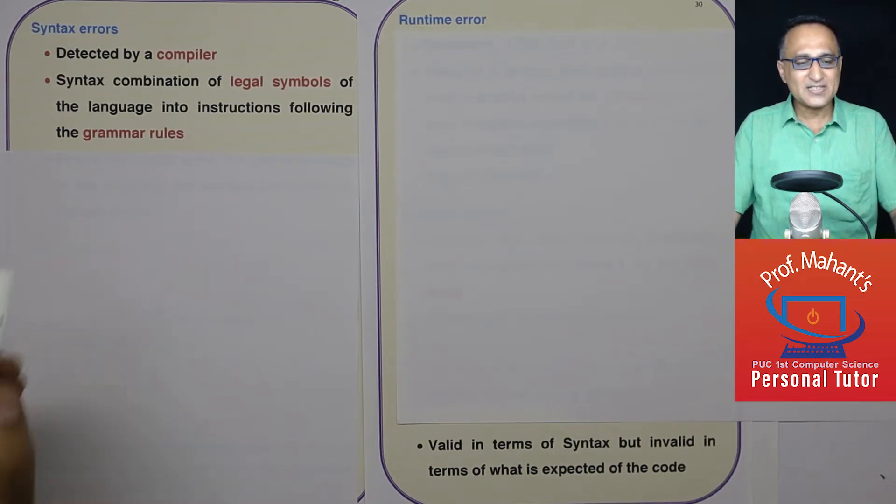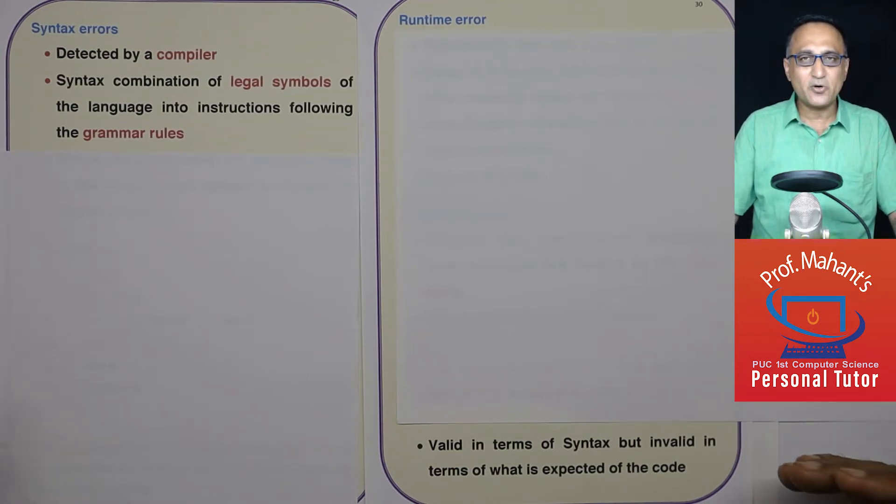These kinds of errors are detected by the compiler during the process of compilation. So what are legal symbols? In the English language, the alphabet A to Z are legal symbols. If I use Kannada letters in English, that's an invalid symbol, and there are certain rules in English like putting full stops.